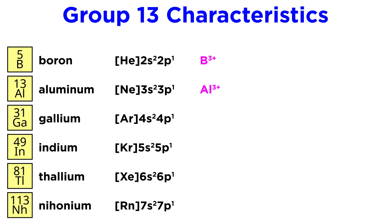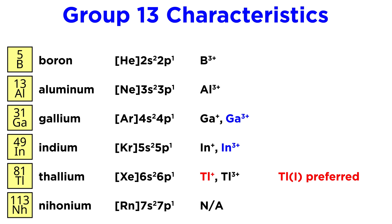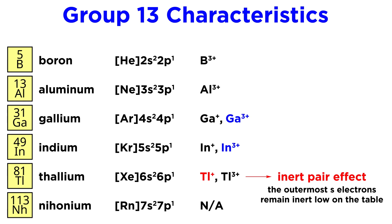Boron and aluminum can make three-plus cations, while the rest can make either one-plus or three-plus cations, with the three-plus being more common — except for thallium, which tends to prefer the plus-one oxidation state due to the inert pair effect, a phenomenon that describes the tendency of the outermost S electrons to remain inert in certain elements very low on the table.